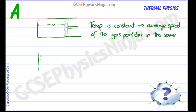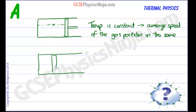Let's push the piston in now and see what happens. So we will push it in to about here. Okay, so we pushed it in. Now this gas molecule is still going at the same speed because we are at a constant temperature, and it is bouncing backwards and forwards off the piston and the back wall.